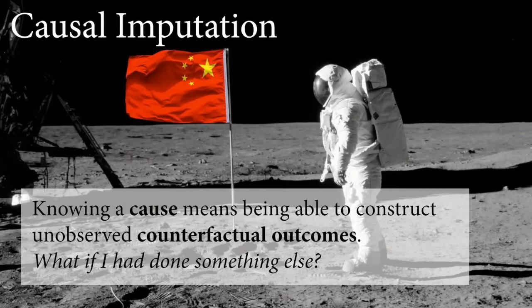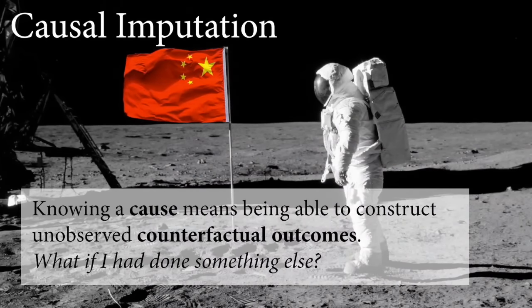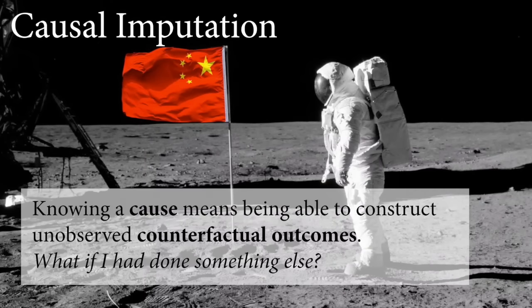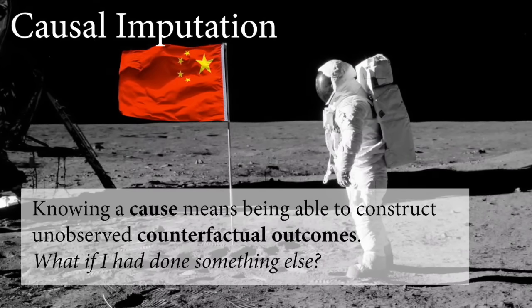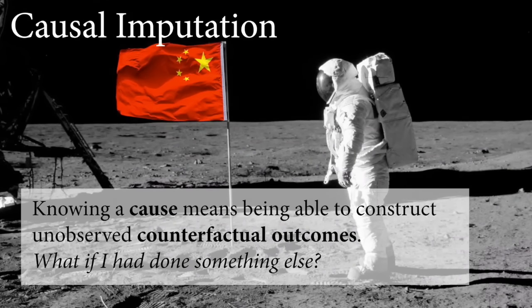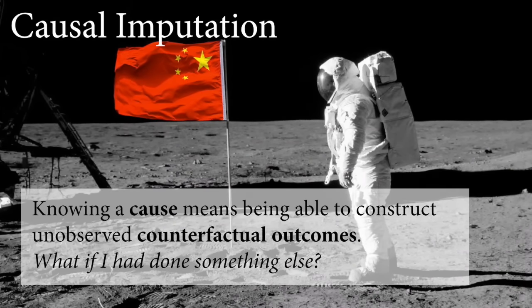The other type is causal imputation. When you know a cause, you're able to construct unobserved counterfactual outcomes — what if something else had happened? If you understand a scientific system and the causes that drive it, you'll be able to do this. For example: what if another country had been the first to land on the moon? No one can answer that. But there are simpler systems where we understand enough to do this kind of imputation.